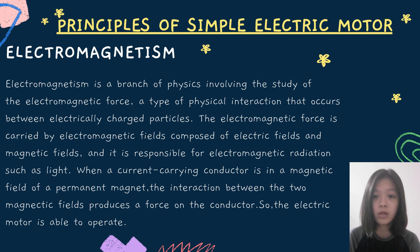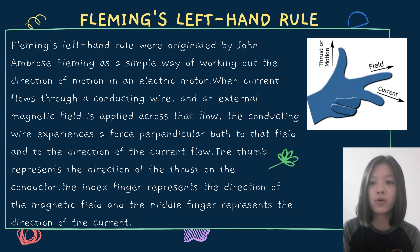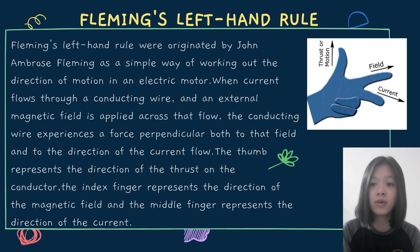So, the electric motor is able to operate. Fleming's left-hand rule was originated by John Ambrose Fleming as a simple way of working out the direction of motion in an electric motor. When currents flow through a conducting wire and an external magnetic field is applied across that flow, the conducting wire experiences a force perpendicular both to that field and to the direction of the current flow. The thumb represents the direction of the thrust on the conductor, the index finger represents the direction of the magnetic field, and the middle finger represents the direction of the current.